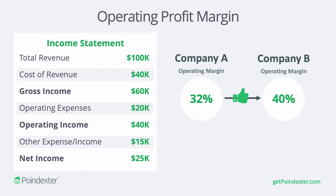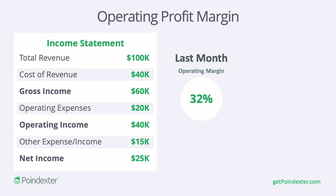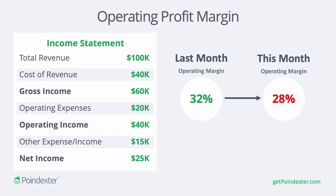So if we had an operating margin last month of 32% and an operating margin this month of 28%, we can see right away that for some reason costs are growing quicker than revenue, and that prompts an investigation into what's happening so that we can correct the issue.